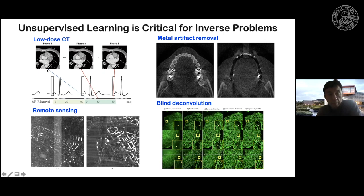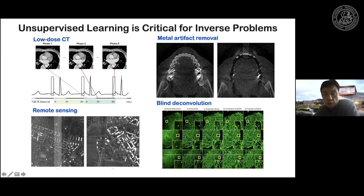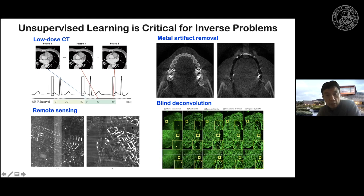Supervised learning is not possible here because the heart is moving — there is no paired data. Consider also the metal artifact removal task in CT: there are striking and shading artifacts. To do supervised learning you need data with and without metal artifacts simultaneously, which is not possible in a clinical environment. Similarly for remote sensing — satellite imagery sensors are sometimes corrupted by hardware errors or atmospheric effects, producing artifacts. Again, paired data with and without artifacts is not possible.